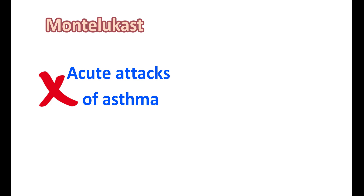Montelukast can block the actions of leukotrienes, thereby inhibiting bronchoconstriction. However, Montelukast is not suitable for the treatment of acute attacks of asthma. This medication is not a direct bronchodilator — it does not produce relaxation of bronchial smooth muscle. It mainly blocks leukotriene actions, thereby inhibiting underlying inflammation. Therefore, for acute attacks, Montelukast is not useful and cannot produce bronchodilation immediately.